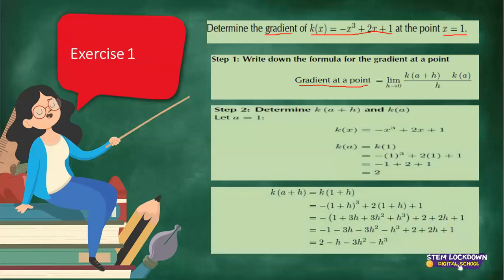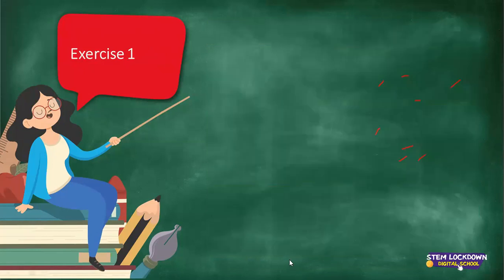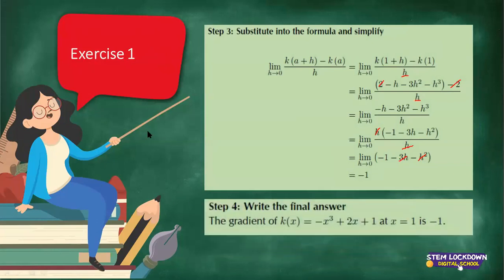Which part do you need help with? The student says they just needed to copy down the final answer. The teacher clarifies: do you understand how we worked it out? Yes. The teacher notes that the question is either an example or exercise in the Siyavula textbook. Remember, in the place of A, you can replace it with X, work it out, and only plug in the value of X at the end — whichever method works best for you.